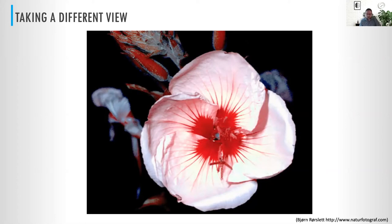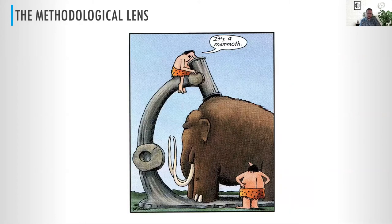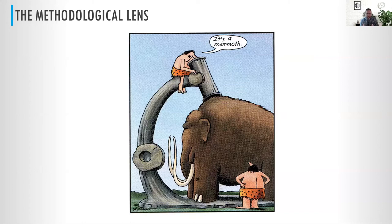In general, we are really looking at the world through a methodological lens. This methodological lens is really important because the way that we look at a problem can deeply influence the way that we think about the system that we are studying. It's really important to make sure that aspects of these methods don't get confused with the properties of the system — we have to see the whole mammoth, so to speak.